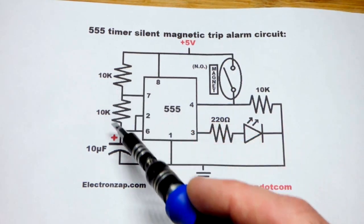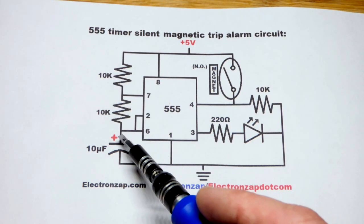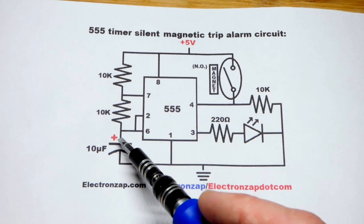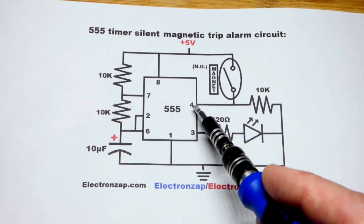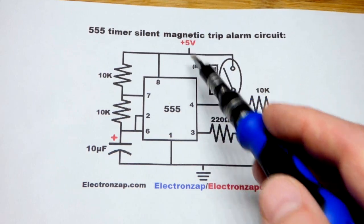Now, we have it wired in A-stable mode so that it keeps setting the output high and low as the capacitor keeps charging and discharging. That's what A-stable mode does. But to do that, you need pin 4 tied to the positive side of the power supply.